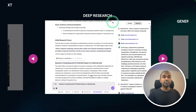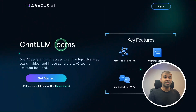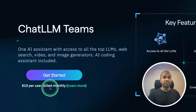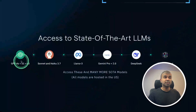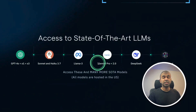This deep research is available in Chat LLM for Teams by Abacus AI, just for $10 per month, where you get access to top large language models such as GPT-4o, O1, O3, Claude Sonnet, Gemini Pro, and DeepSeek.